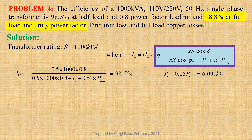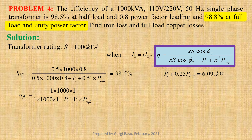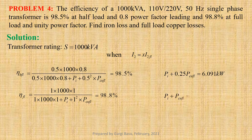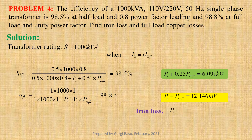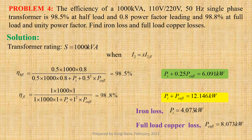At full load and unity power factor, efficiency ETA_FL equals to 1 into 1000 into 1 divided by 1 into 1000 into 1 plus P_I plus 1 squared into P_copper_FL, that is equal to 98.8 percent. Therefore, P_I plus P_copper_FL equals to 12.146 kW. By solving these two equations, we get iron loss P_I equals to 4.073 kW and full load copper loss P_copper_FL equals to 8.073 kW.